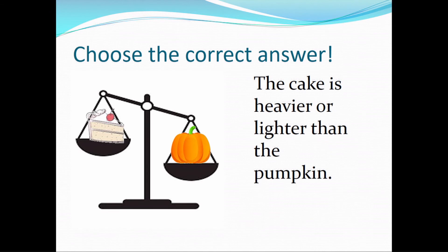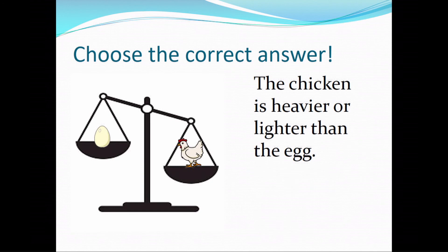Is the cake heavier or lighter than the pumpkin? We have one slice of cake and one huge pumpkin. Let's look at the balance scale — does the side with the slice of cake go up or down? It goes up, so the slice of cake is lighter than the pumpkin. Is the chicken heavier or lighter than the egg? The side of the balance scale with the chicken goes down, which means the chicken is heavier than the egg.